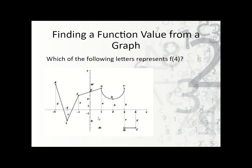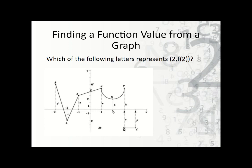Finding a function value from a graph: which of the following letters represents f of 4? I go to where x is 4, and f of 4 is represented by the dotted line p. So p represents f of 4. If it asks for the actual solution, that would be c. Now if it gives us f of 2, we go to x equals 2 and select the actual point on the graph, which in this case is d. If you see just f of 2 as a value, it's the value on the dotted line, which would have been b.